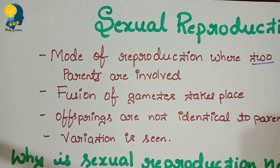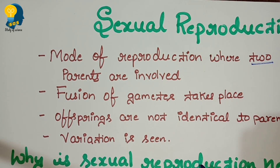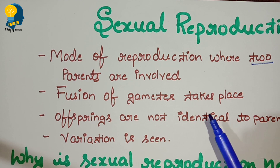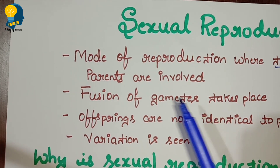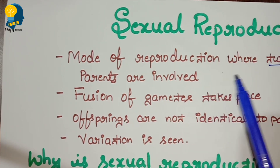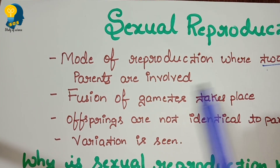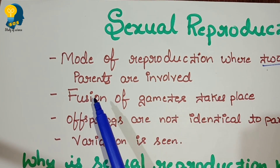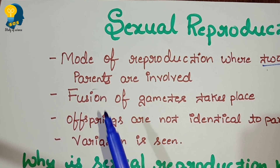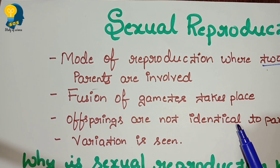When I talk about asexual, there is a single parent — only with the help of one single parent, a new organism is formed. But when I talk about sexual mode, there is involvement of two parents. Two parents are involved in the sexual mode of reproduction.